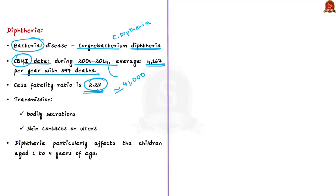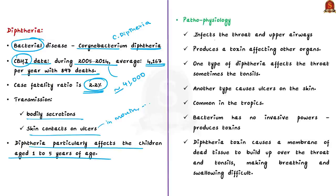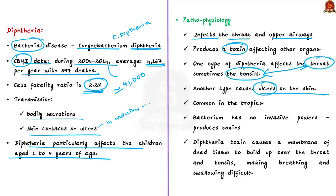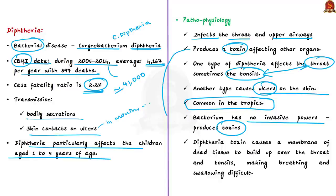Diphtheria particularly affects children aged one to five years. Transmission is commonly through bodily secretions; sometimes skin contact on ulcers also causes transmission. Corynebacterium diphtheriae primarily infects the throat and upper airways and produces a toxin that affects other organs. One type affects the throat and tonsils; another type causes ulcers on the skin, more common in the tropics. Notably, this bacterium has no invasive powers but produces toxins that cause the disease.